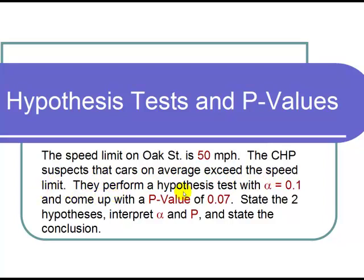They perform a hypothesis test with alpha equals 0.1 and come up with a p-value of 0.07. State the two hypotheses, interpret alpha and p, and state the conclusion.